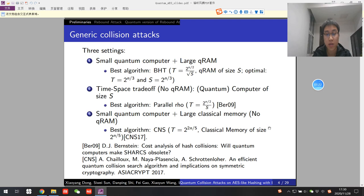In this paper, we are talking about quantum collision attacks on hash functions. Therefore, we have to understand generic collision attacks on hash functions in different settings. Currently, there are three settings.